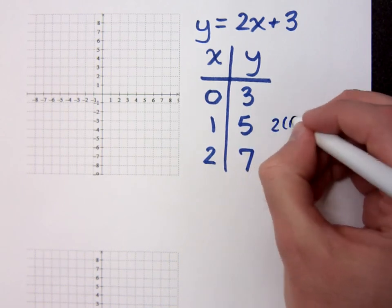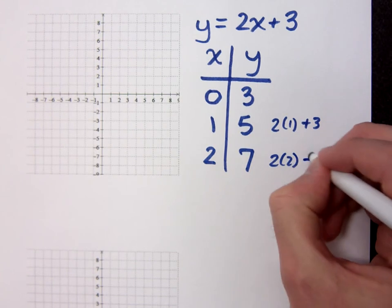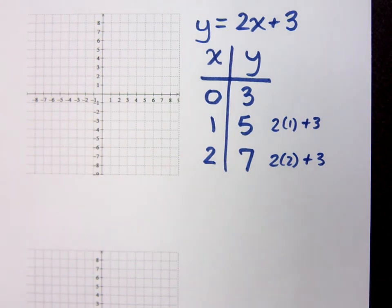Remember, you're just doing 2 times 1 plus 3. 2 times 2 plus 3, and that's how you get the 5 and the 7. That's all they want you to do. And when you plot these guys, it should give you an idea about what the graph should look like.